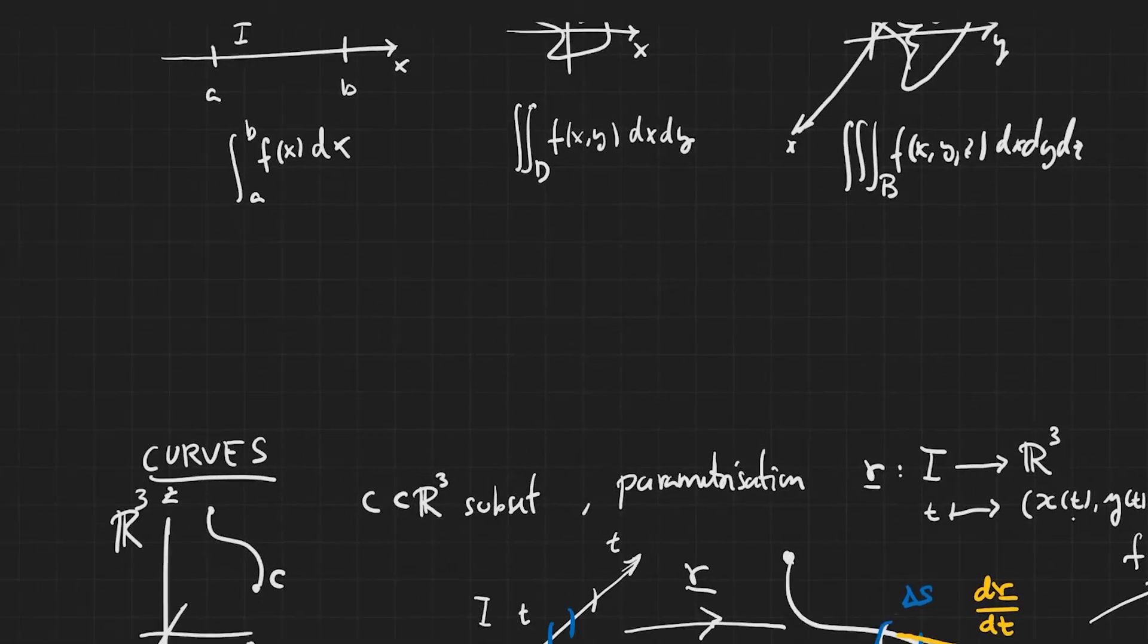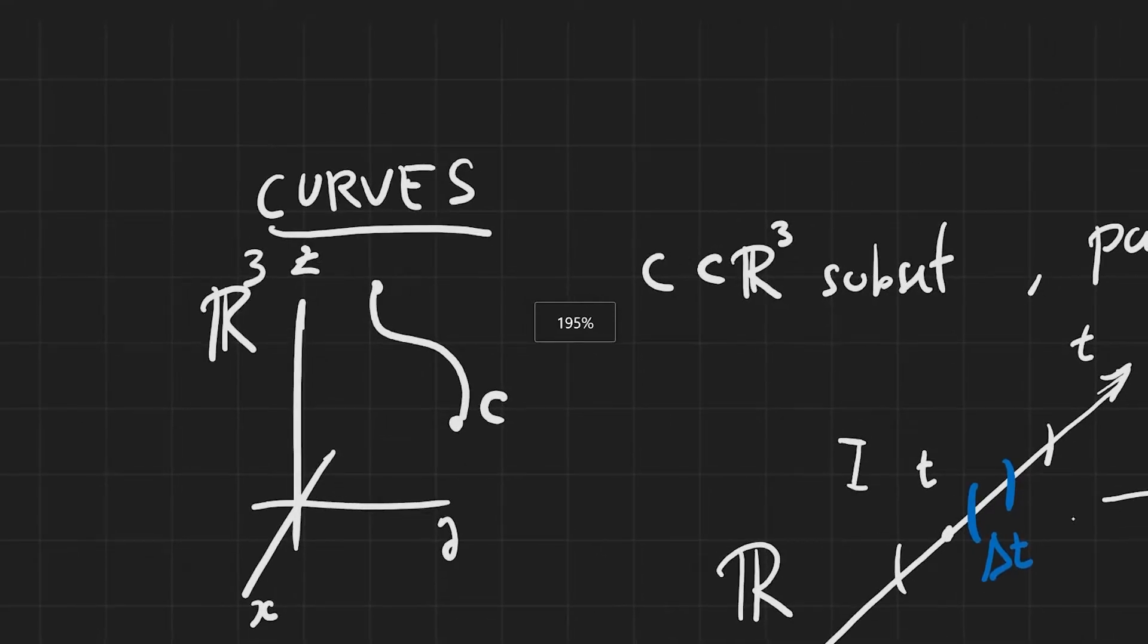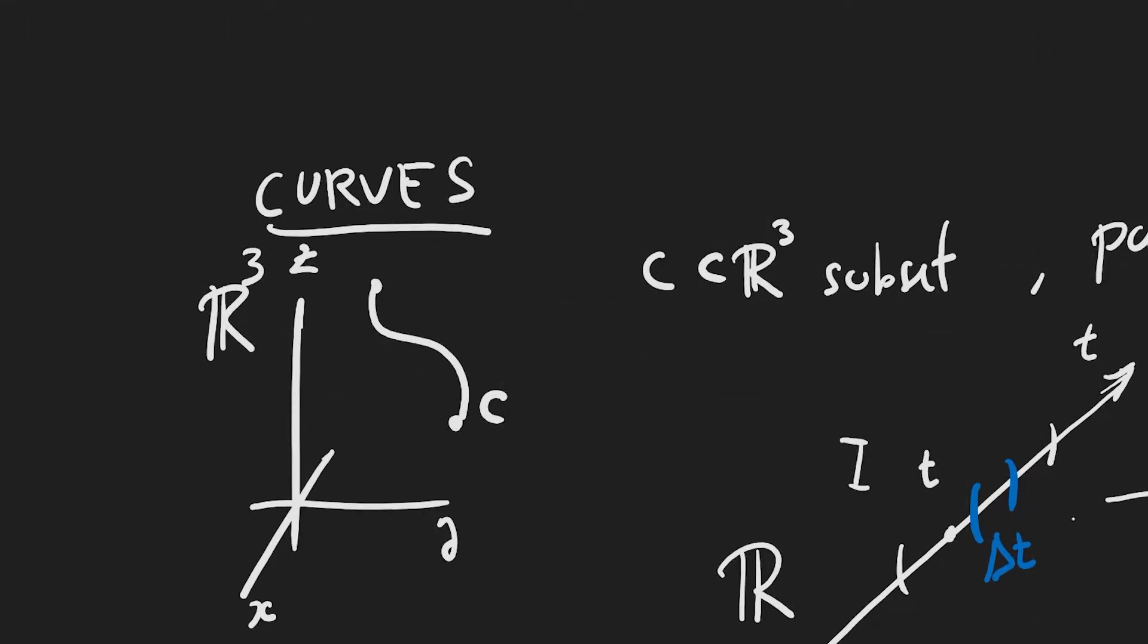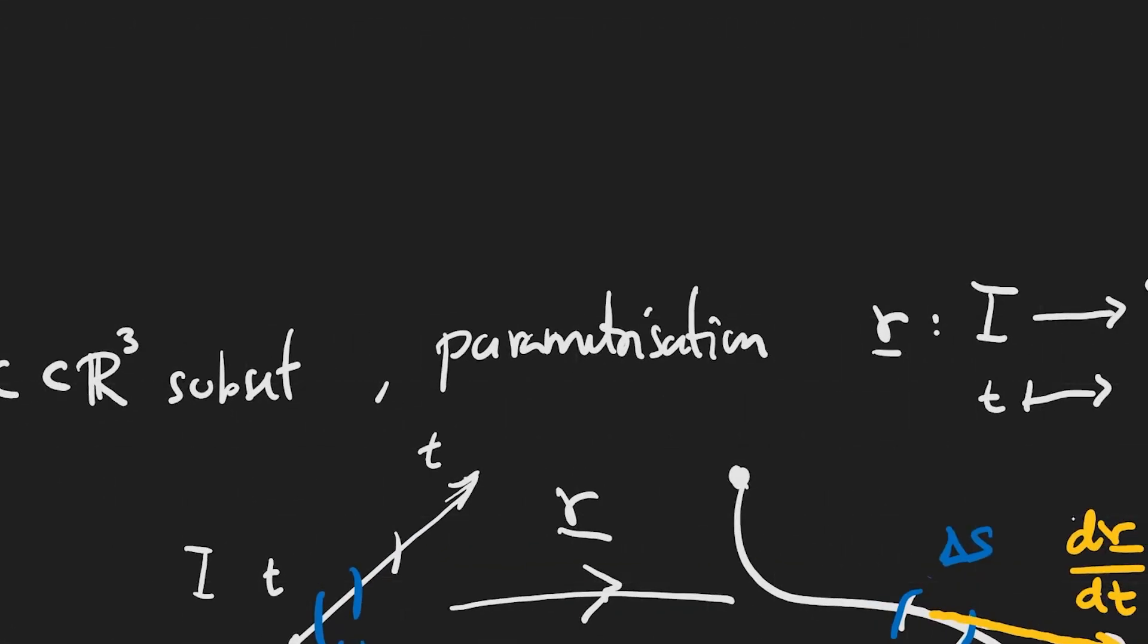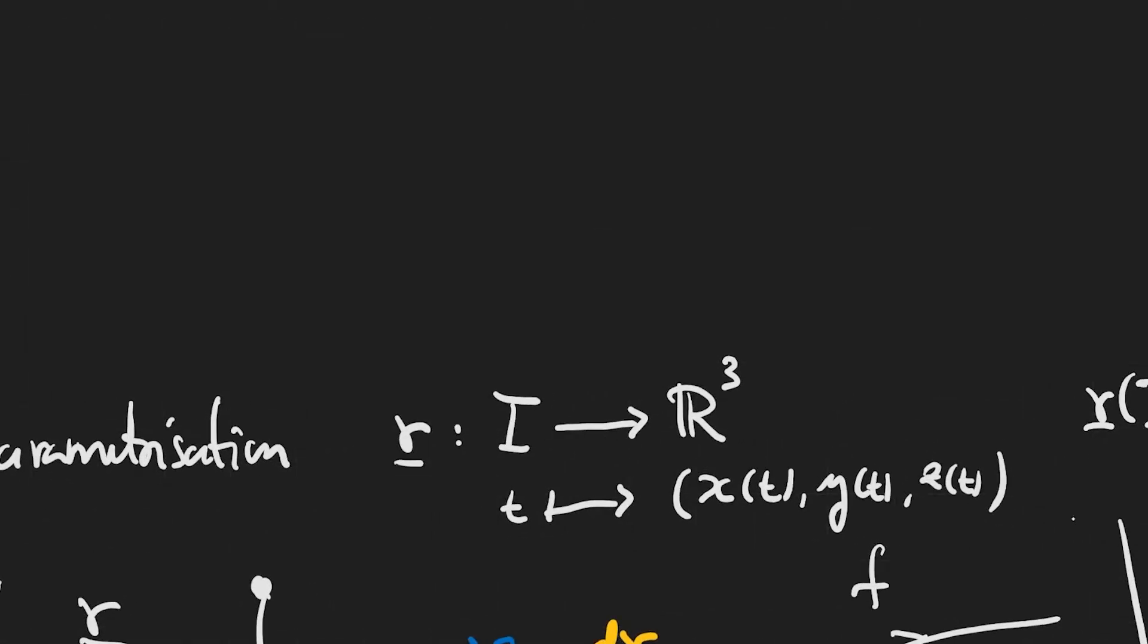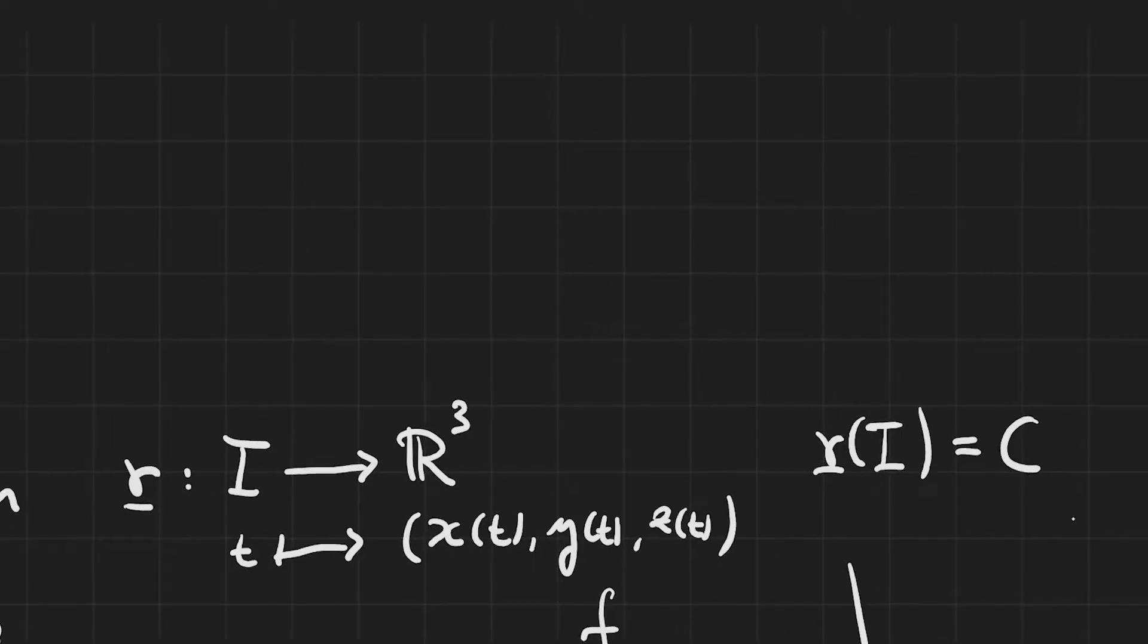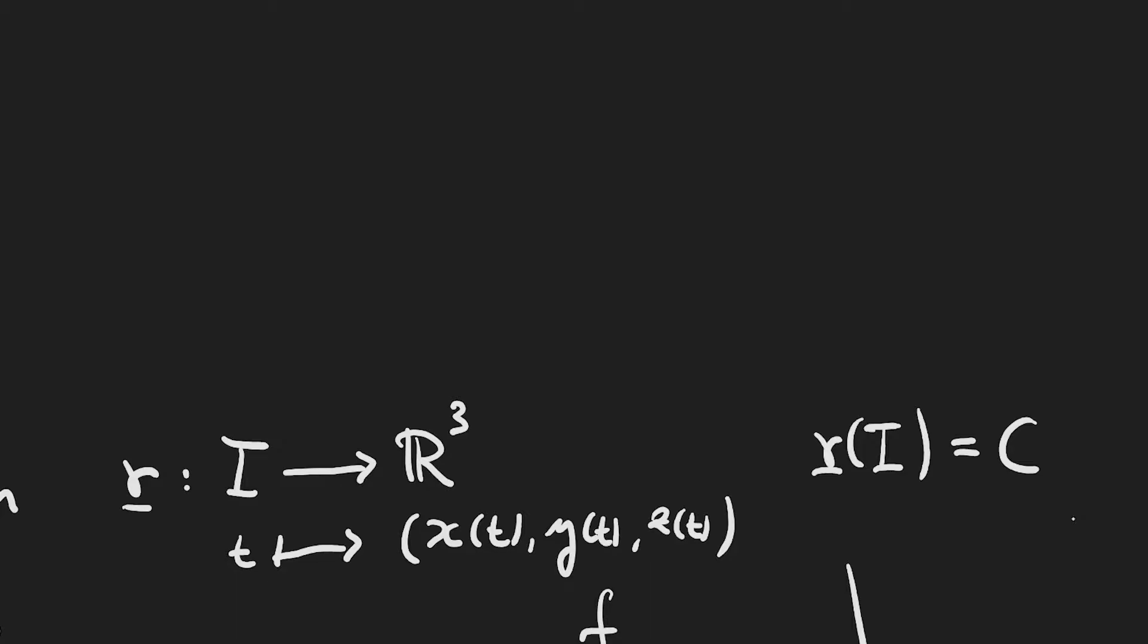So let's go over curves first. When dealing with curves, what we're thinking about is a special subset of R³ that, in some sense, we regard as being linear or one-dimensional. Now, the way we make this precise is by saying that the curve is given by a parameterization of this form, so a map from a real interval I to R³, so that is the coordinates x, y, z depending on the parameter t, in such a way that the image of this map is precisely C, the curve, the set in R³.